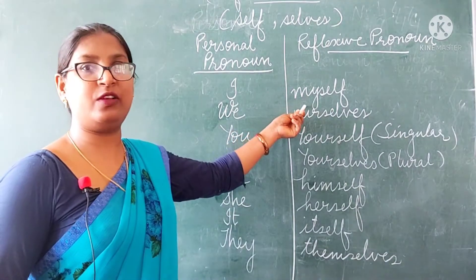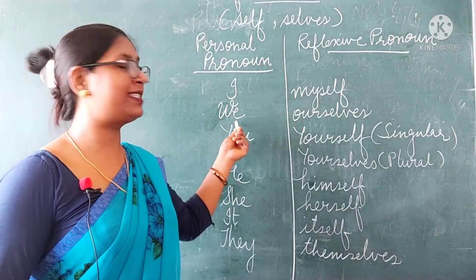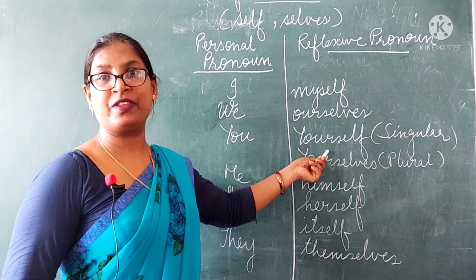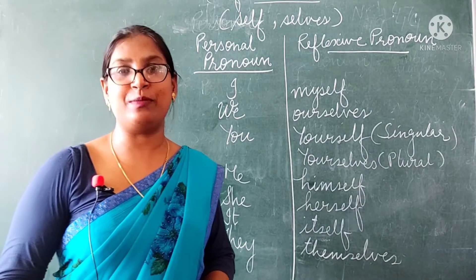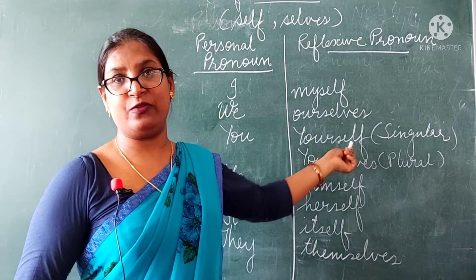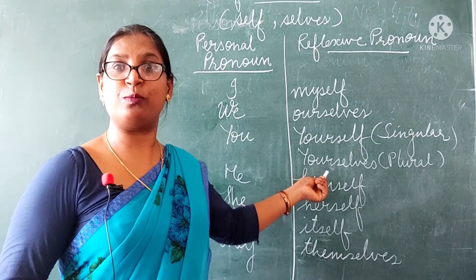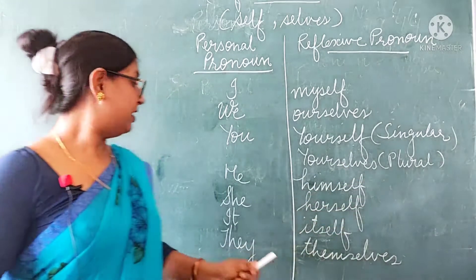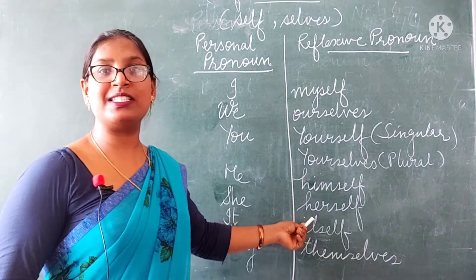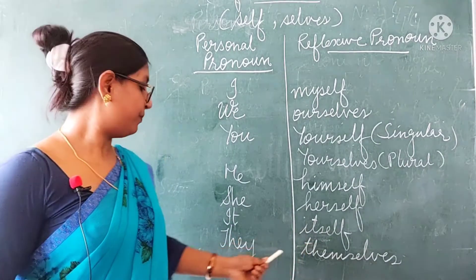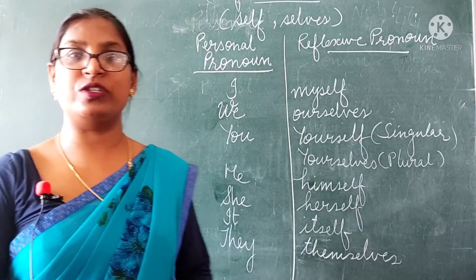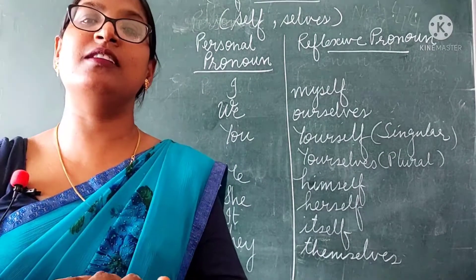Here in this table the personal pronouns are on one side and their reflexive forms on the other. "I" becomes "myself." "We" becomes "ourselves" — since "we" is plural, we use "-selves." "You" becomes "yourself" for singular and "yourselves" for plural — the pronoun "you" can be used for singular and plural both. "He" becomes "himself," "she" becomes "herself," "it" becomes "itself," and "they" becomes "themselves." All these are reflexive pronouns.